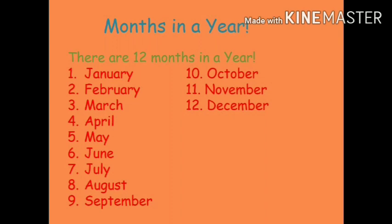Once again let us revise. There are four quarters in a clock and every quarter has 15 minutes. When the minute hand moves from 12 to 6, we call it half past. For example, if the short hand is on 2 and the big hand is on 6, we call it half past 2.